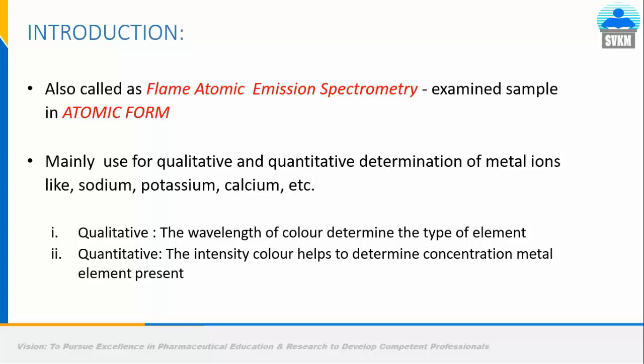This spectrometry is mainly used for qualitative and quantitative determination of metal ions present in the sample, such as sodium, potassium, calcium, and lithium. For qualitative analysis, we can observe the change in color of the flame to determine whether a particular metal is present. The intensity of the color, digitalized as numbers, can be used for quantitative analysis. We can prepare a series of dilutions and count the number of ions present in the diluted aliquots.